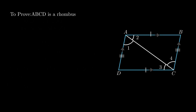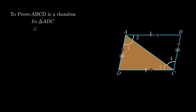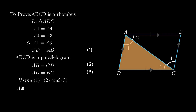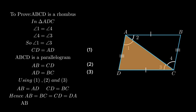Now to prove ABCD is a rhombus, consider triangle ADC. Since angle 1 = angle 4 and angle 4 = angle 3, we get angle 1 = angle 3. As sides opposite to equal angles are equal, side CD = side AD. Since ABCD is a parallelogram, opposite sides are equal: AB = CD and AD = BC. Using these equations, AB = AD and CD = BC. Since all sides are equal, ABCD is a rhombus.